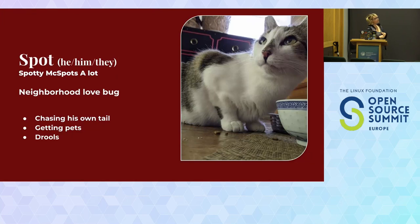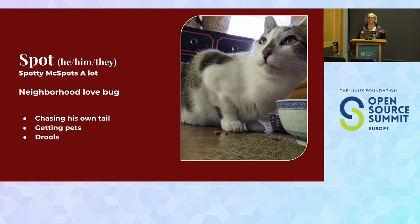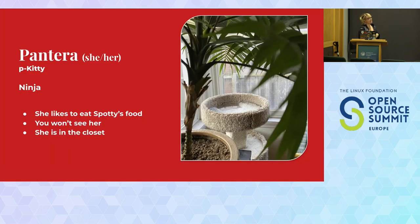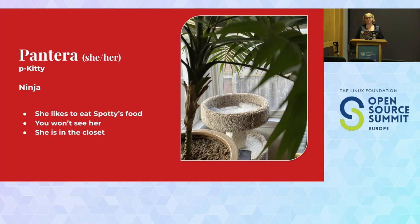This is a picture of Spotty McSpotsalot. He's my cat. He goes by Spot for short, and the reason I have him up here is because he likes to code, so if there's any typos in the slides it's because he's been laying on the keyboard. And then I'd be remiss not to mention Pantera — we don't see her. We think she's a ninja and she's in the closet. Anything like the clickety-clackety of a Zoom call scares her off.